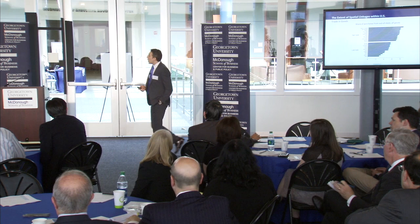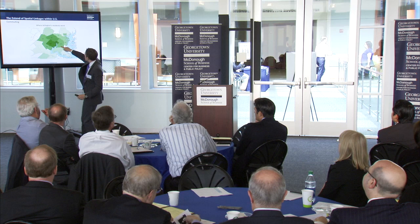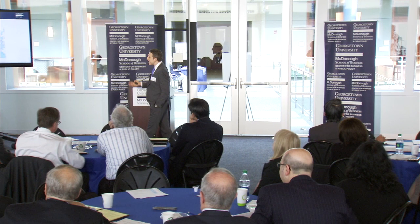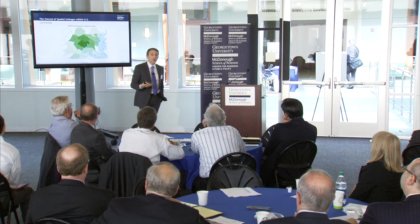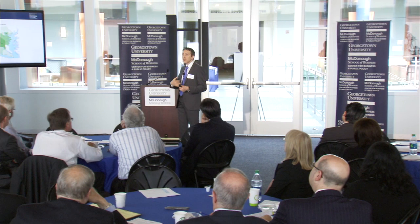There's another piece of spatial linkages which is part of our daily experience: commuting. This is a map of the D.C. area asking where Arlington's residents work. It happens that 31% of residents in Arlington work in Arlington, but 34% work in D.C., and other big pieces are outside the area — so all in all, 70% of people that live in Arlington work somewhere else. Why is this important? Because if labor demand increases in Arlington, there's a very easy way to increase employment there — you just need to convince people to take a shorter commute.